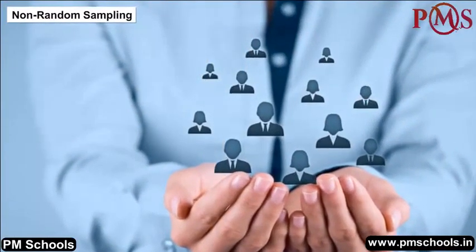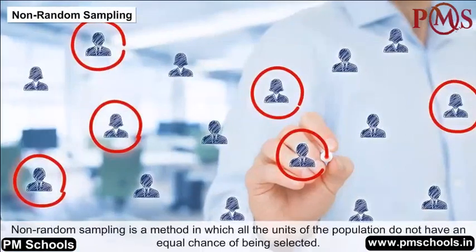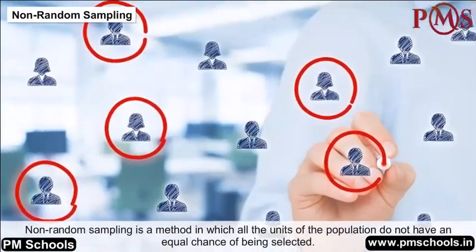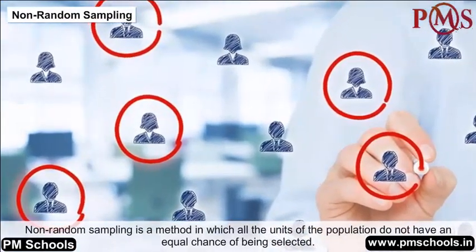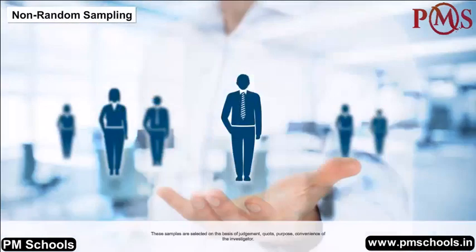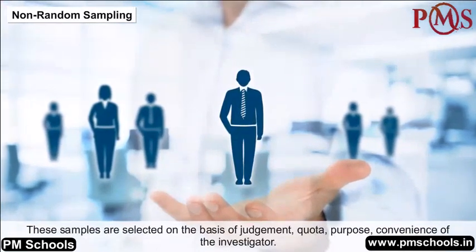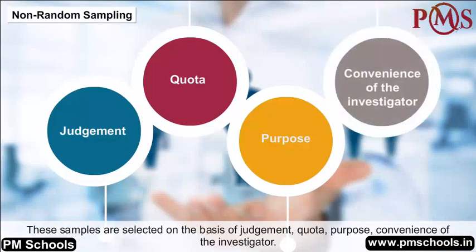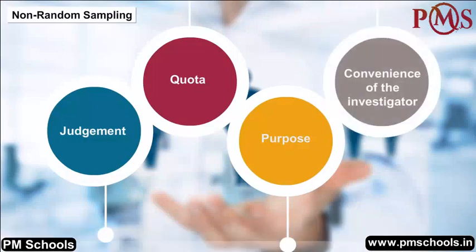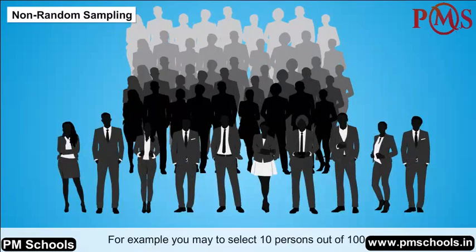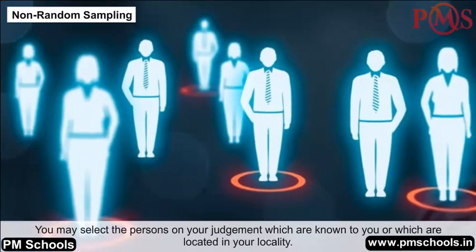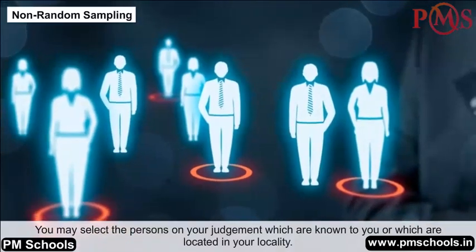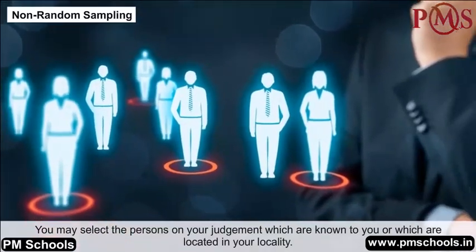Non-random Sampling: Non-random sampling is a method in which all units of the population do not have an equal chance of being selected. These samples are selected on the basis of judgment, quota, purpose, or convenience of the investigator. For example, you may need to select 10 persons out of 100 and select them based on your judgment — those known to you or located in your locality.